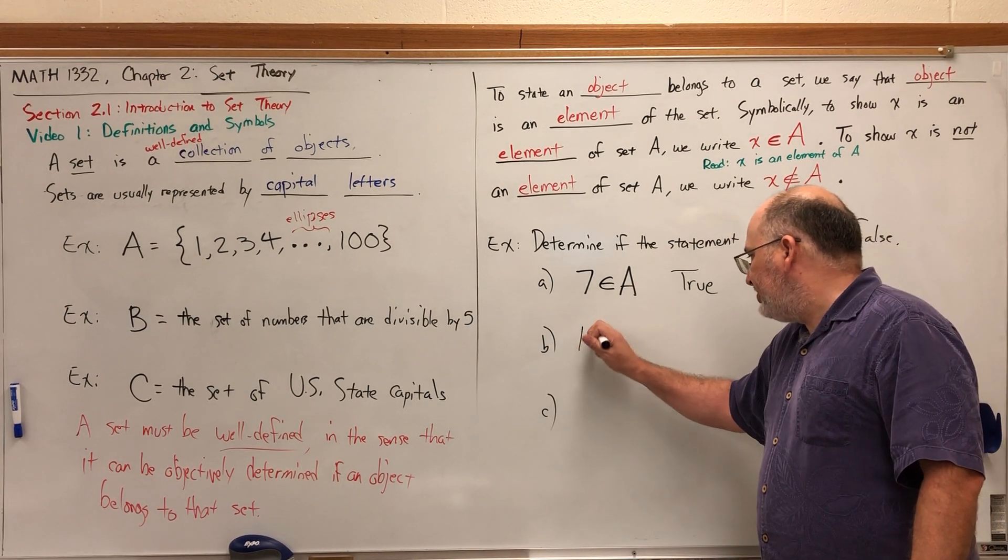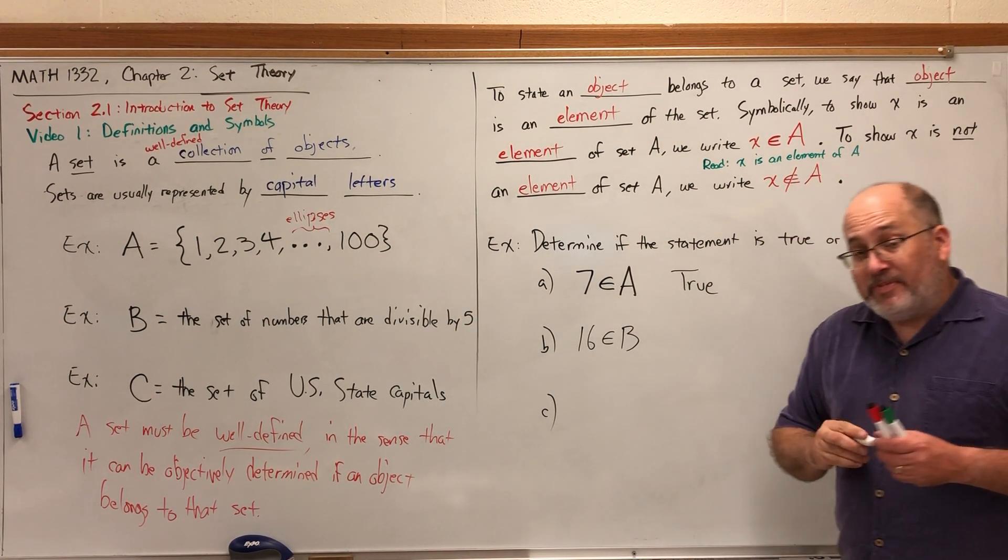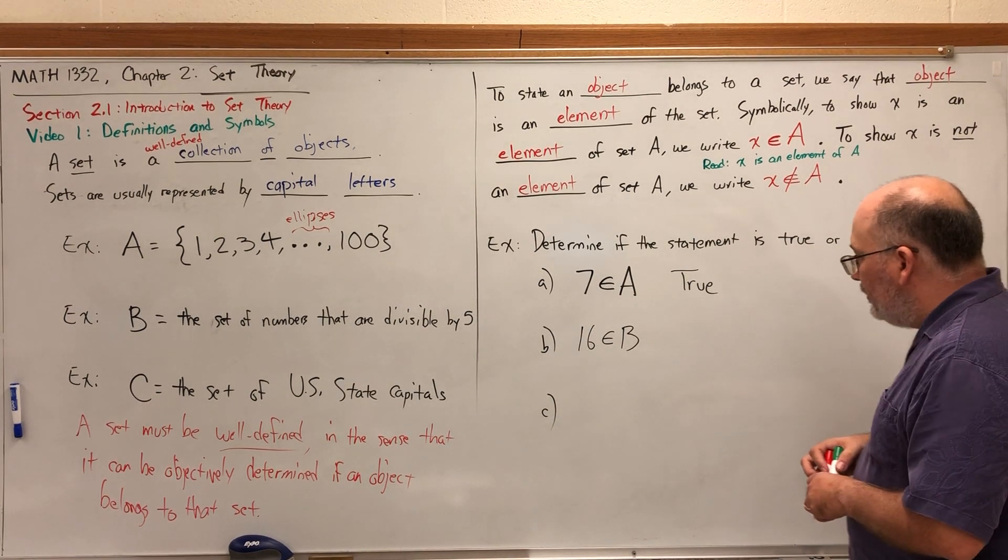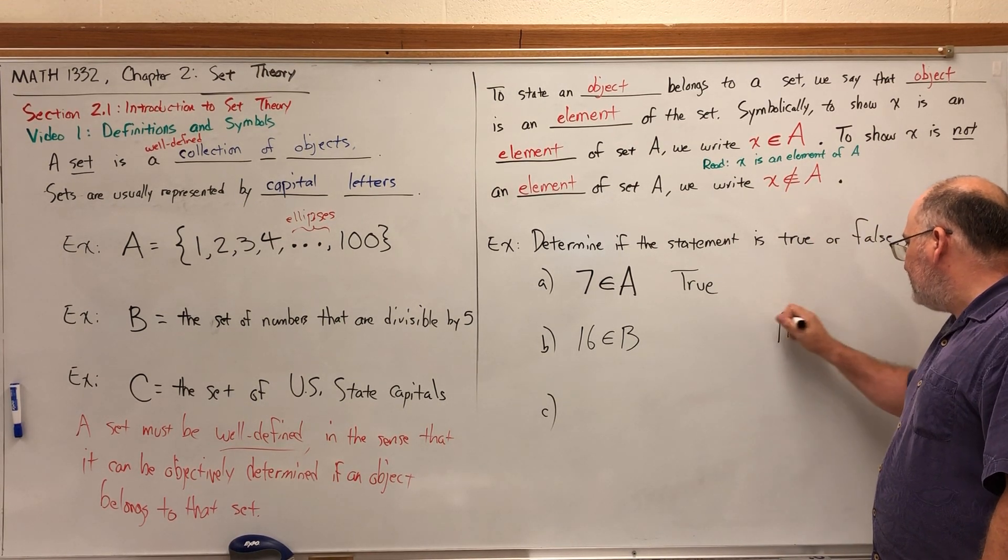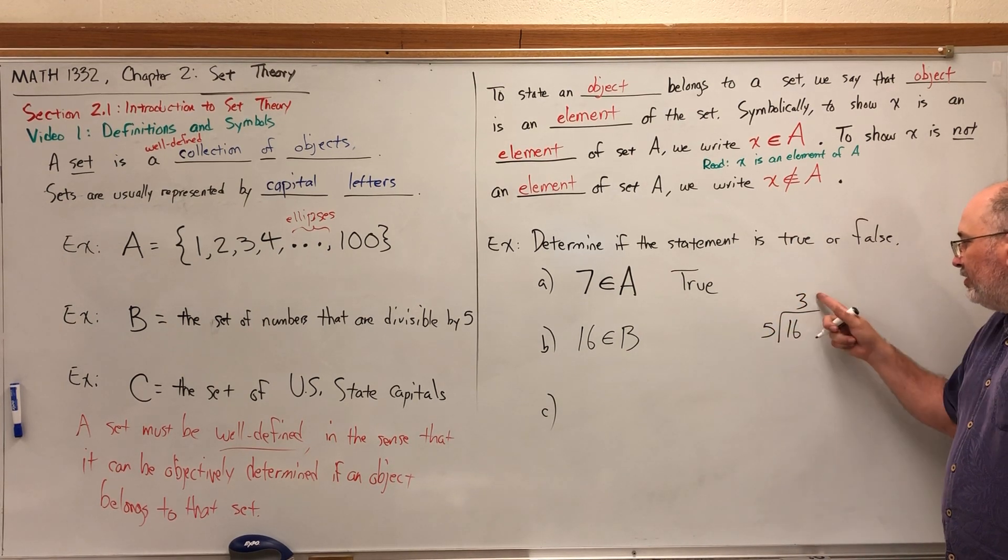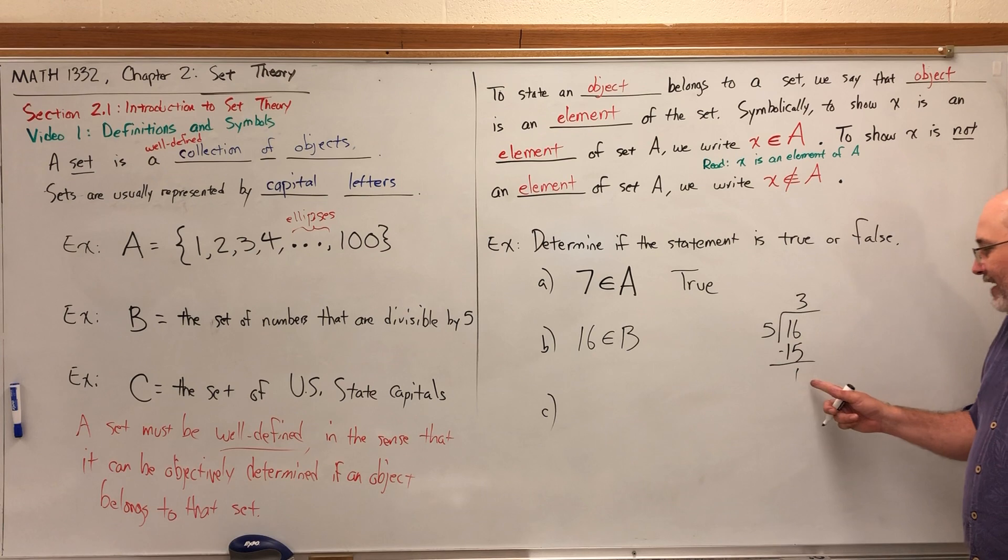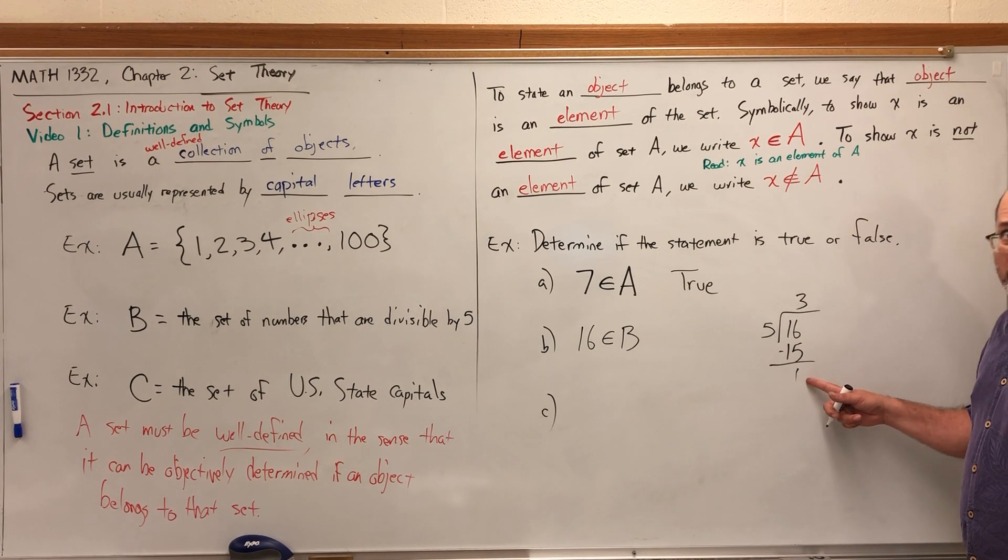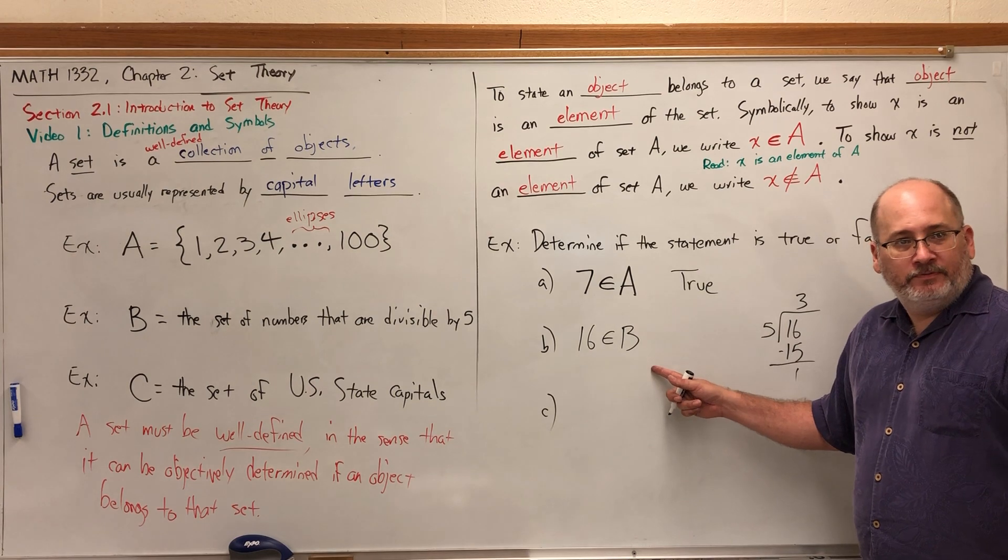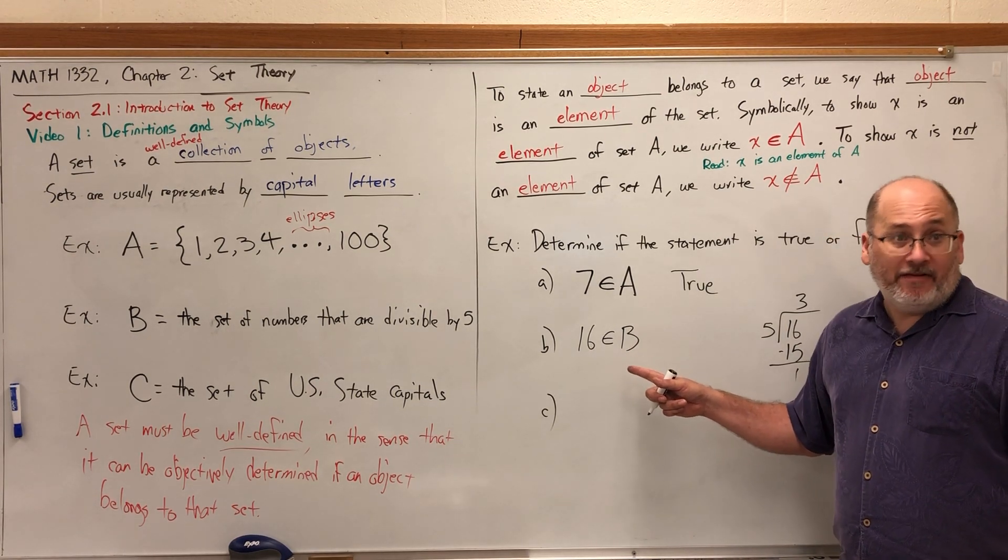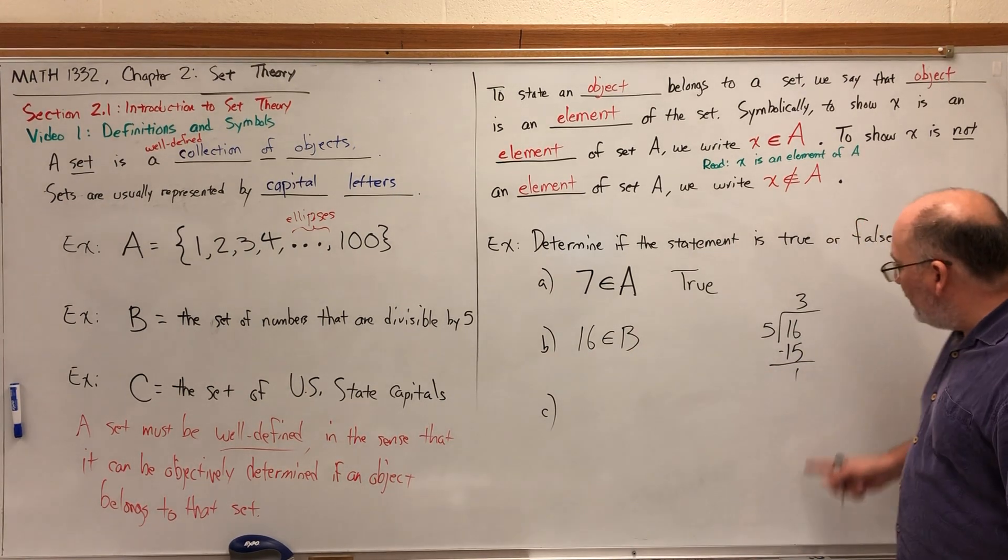How about 16 is an element of B? This is equivalent to asking is 16 divisible by 5? You can check by dividing 16 by 5: 5 goes into 16 three times, 3 times 5 is 15, subtract and you get 1. If it were divisible by 5, my remainder would be zero. This remainder is not zero, which means 16 is not divisible by 5. This sentence says 16 is divisible by 5, so that's false.